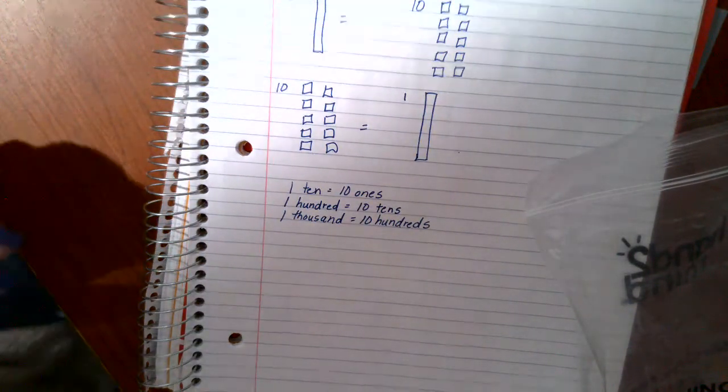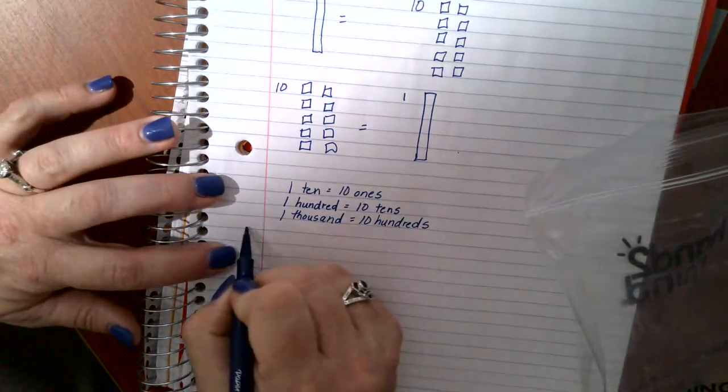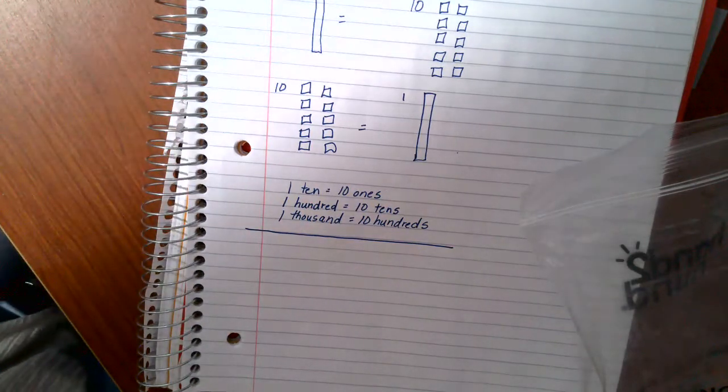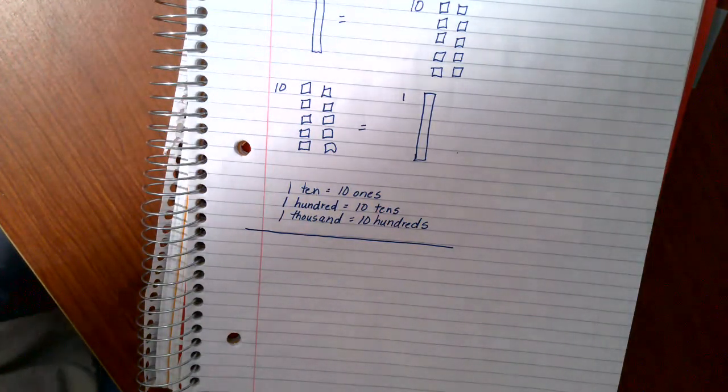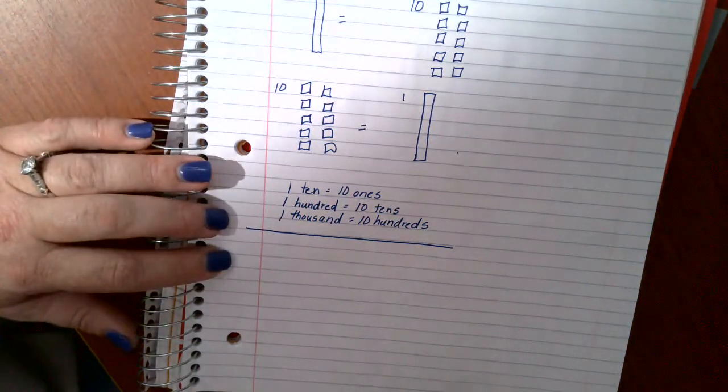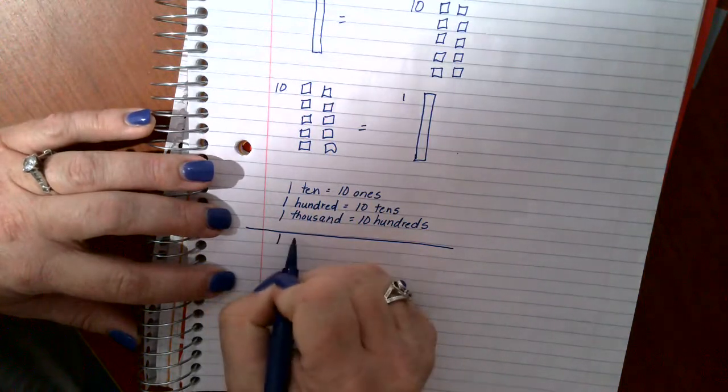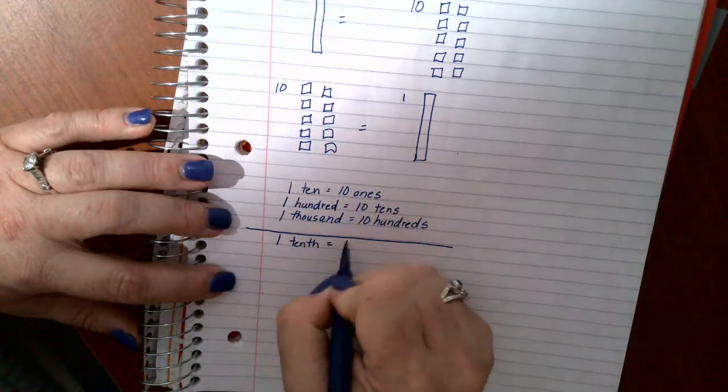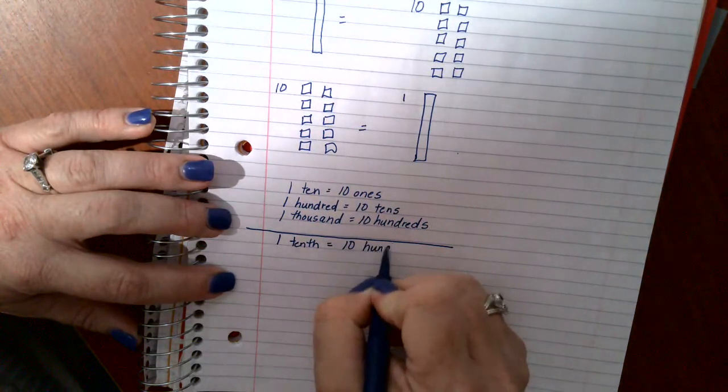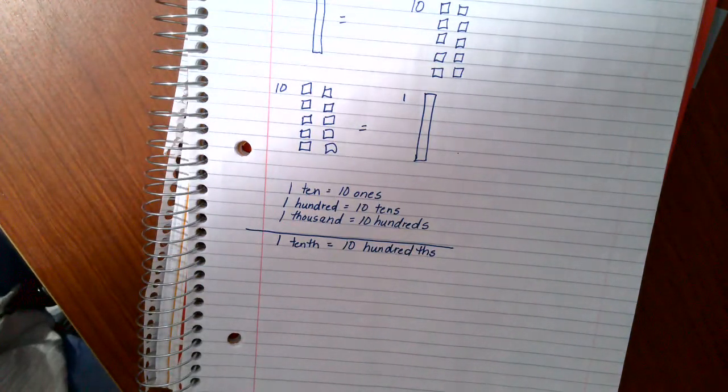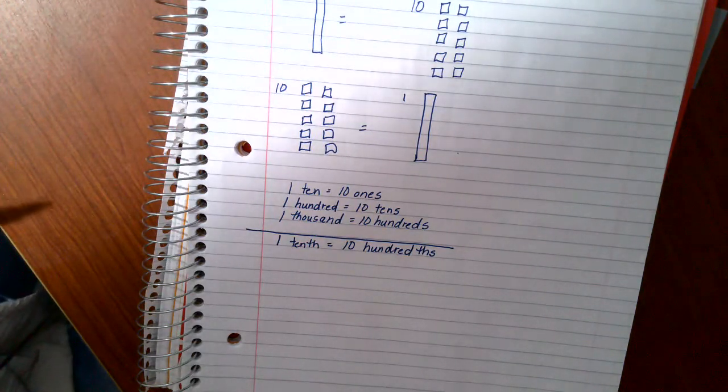Then we start to deal with fractions. These are the parts of the whole, also known as decimals. So, fractions and decimals go hand in hand. So, we know that one tenth, one tenth equals ten hundredths. One tenth equals ten hundredths. So, look.